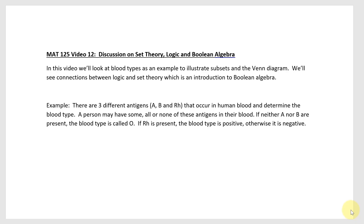There are three different antigens — A, B, and RH — that occur in human blood and determine the blood type. A person may have some, all, or none of these antigens in their blood. If neither A nor B are present, the blood type is called O. If RH is present, the blood type is positive; otherwise it's negative.